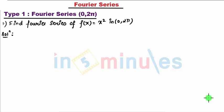So first I kept value of c as 0 so that changes my range to 0 to 2π. My first problem is find Fourier series of f(x) that is equal to x² in 0 to 2π.